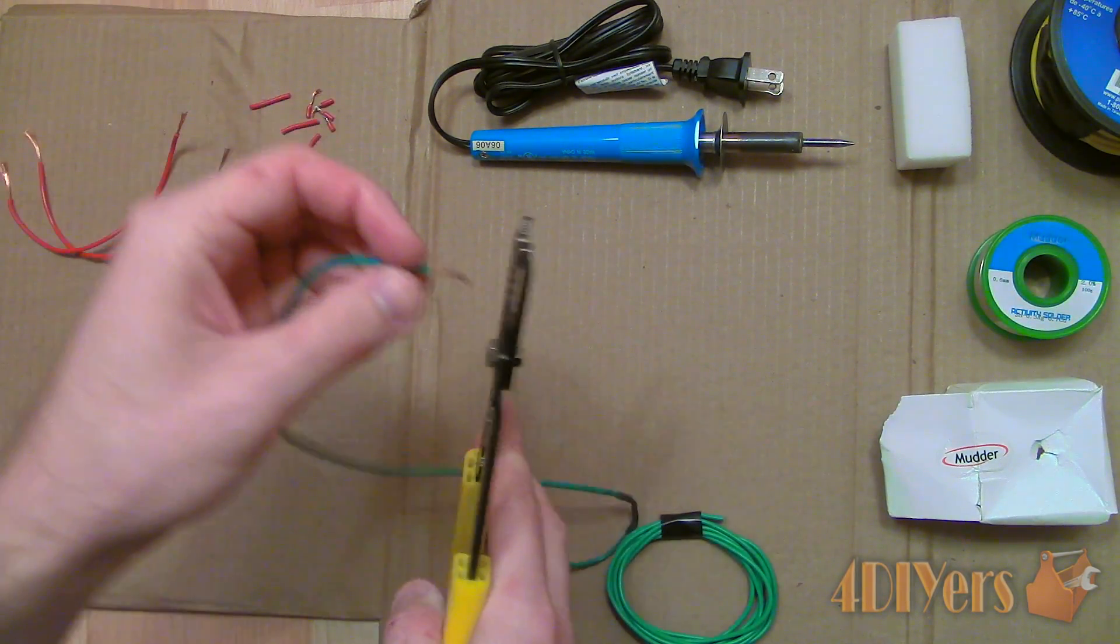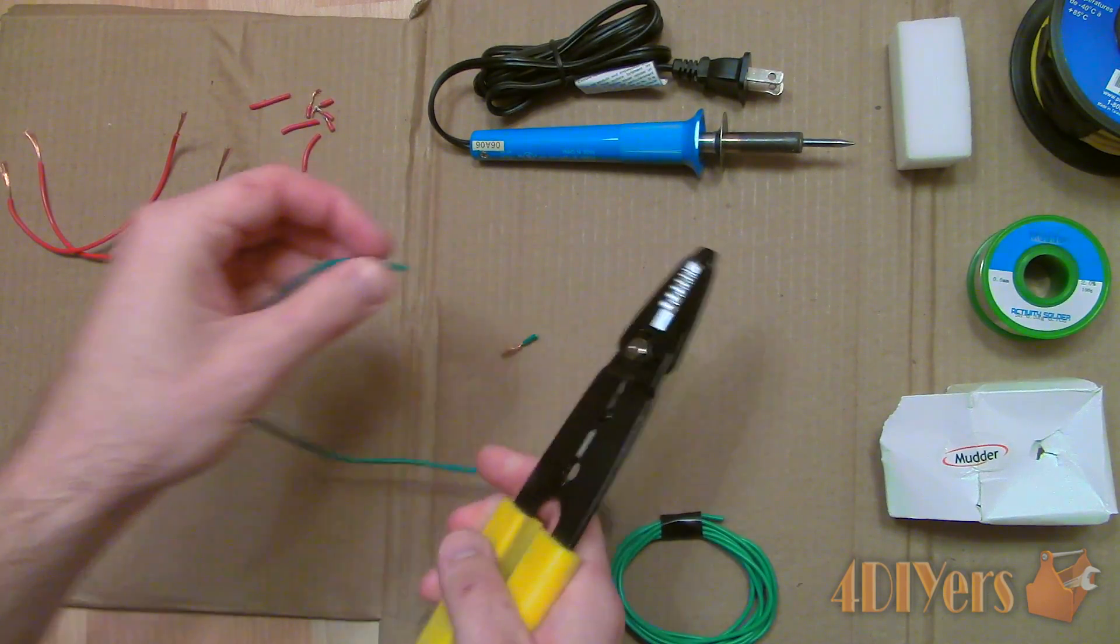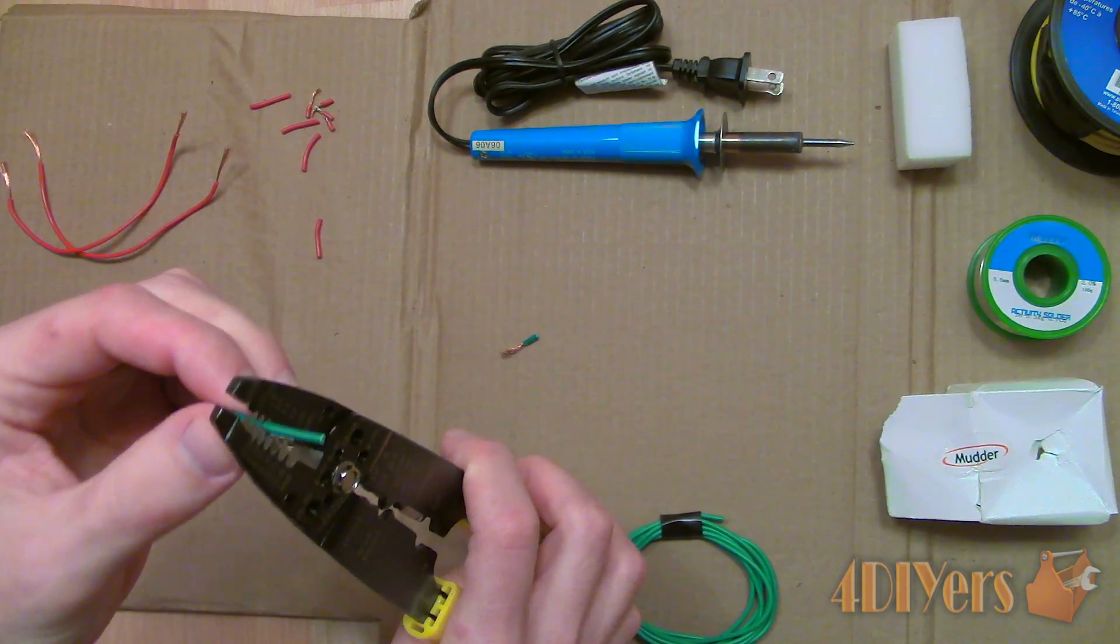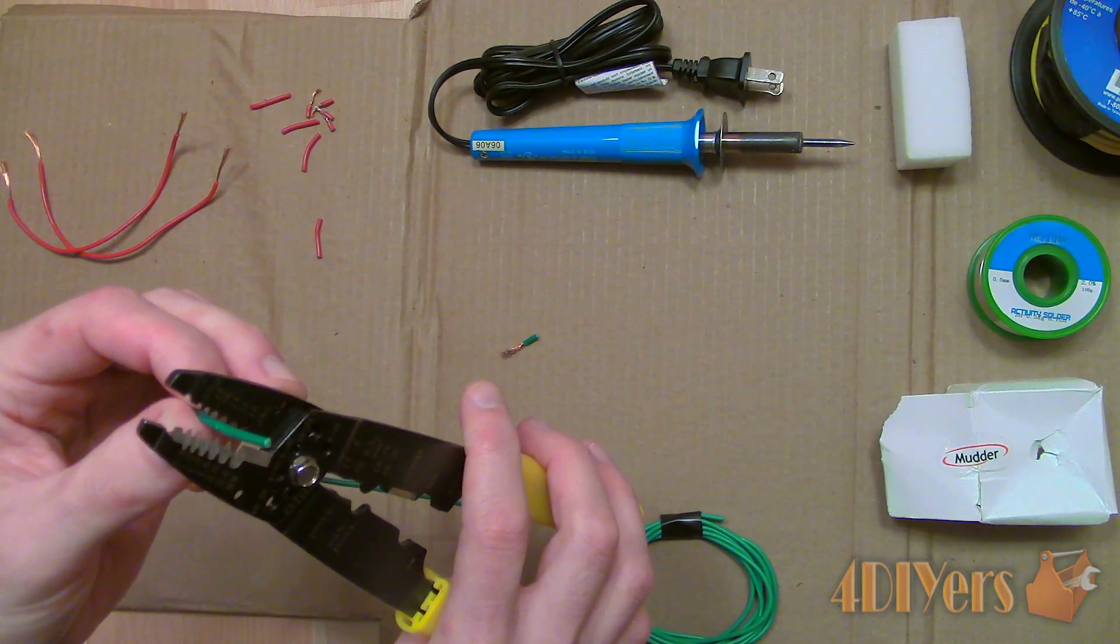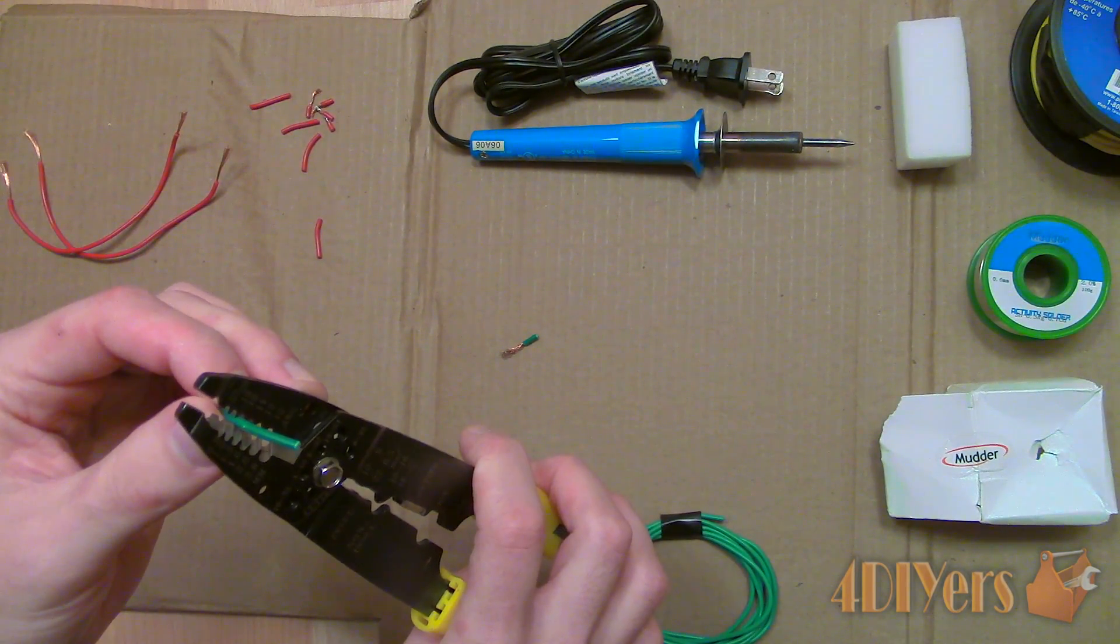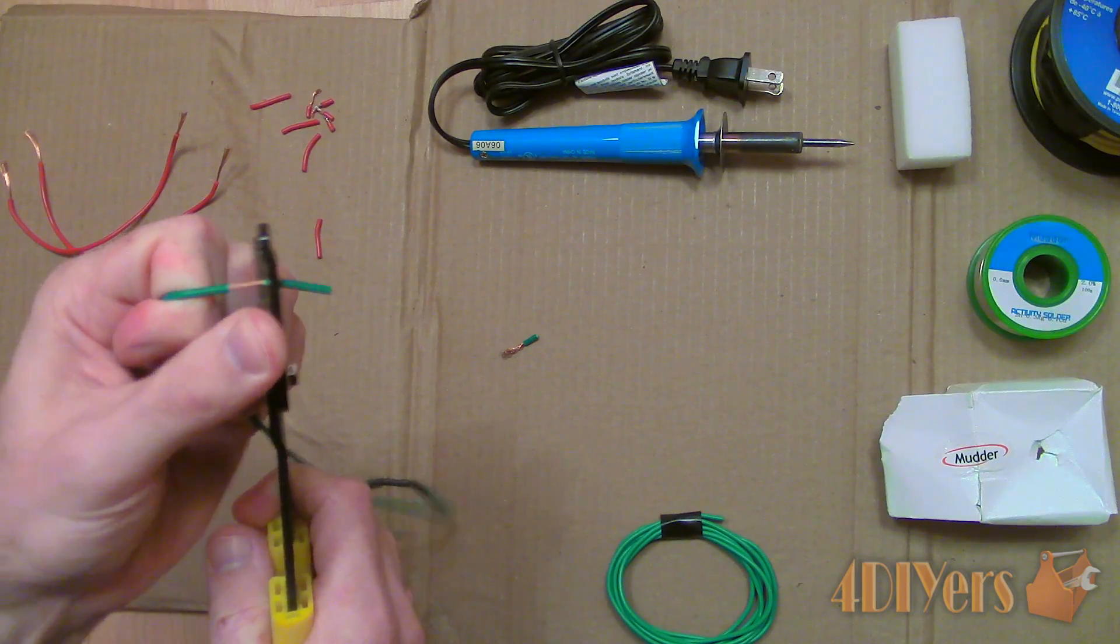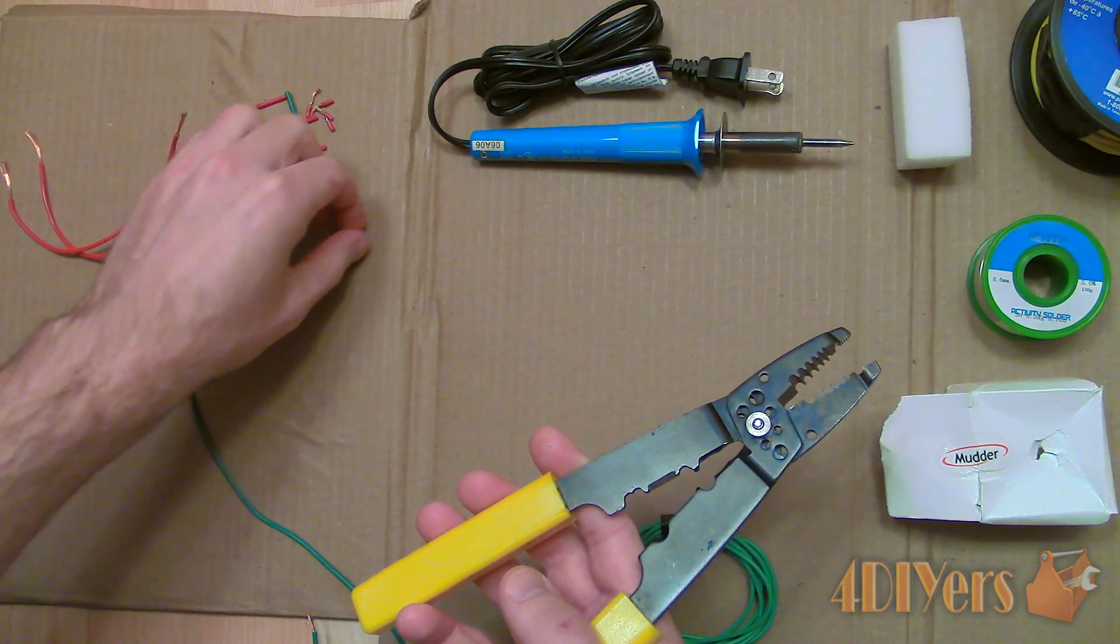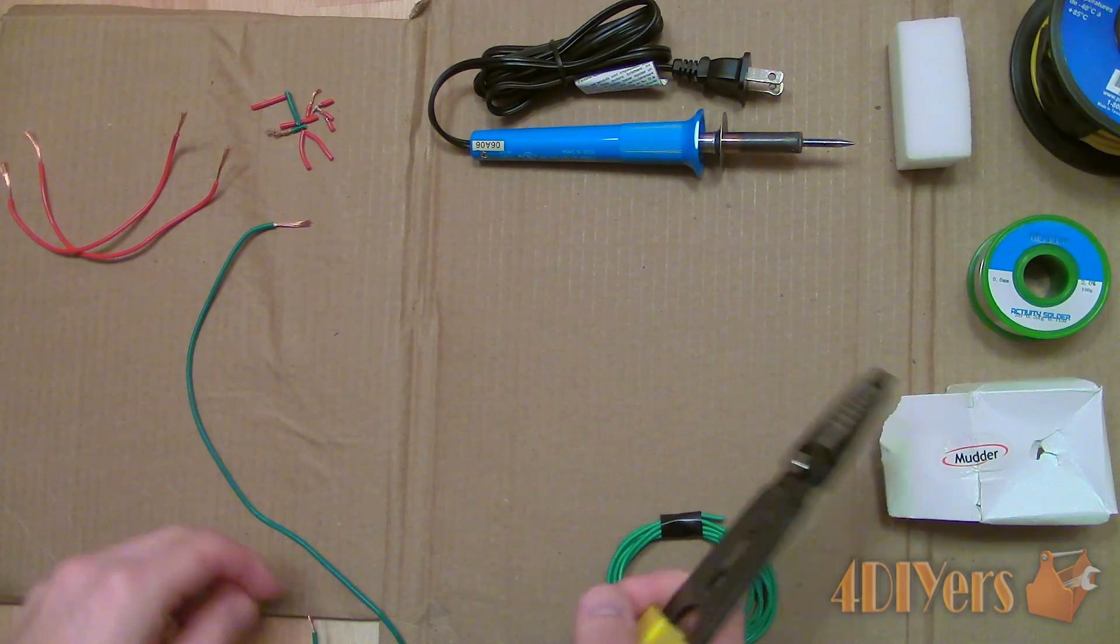Here I am using a lead free rosin core solder made by Mudder. It has a 0.6 mm thickness, 2% rosin core, comes in a 0.22 kg roll and has a 215 to 220 celsius or 419 to 428 Fahrenheit melting point. The link to this product will be included in the description below.